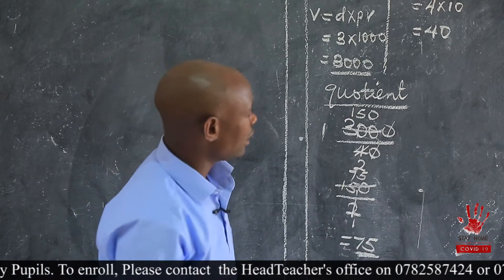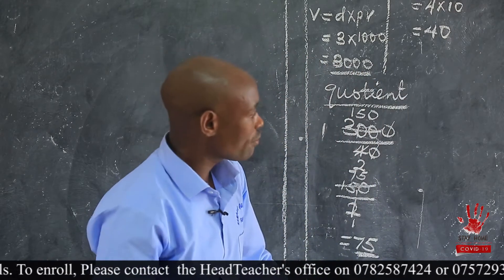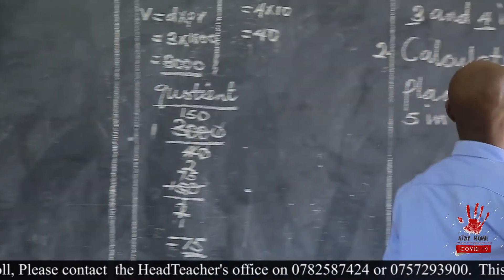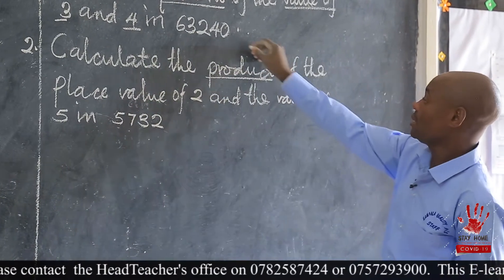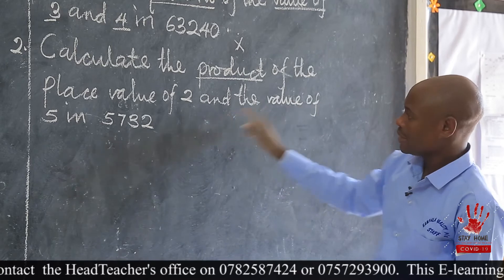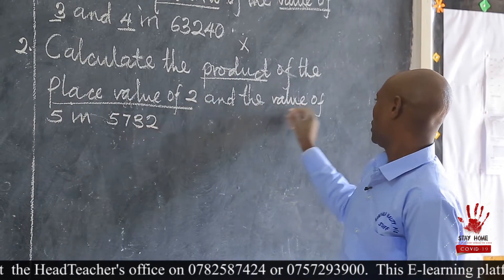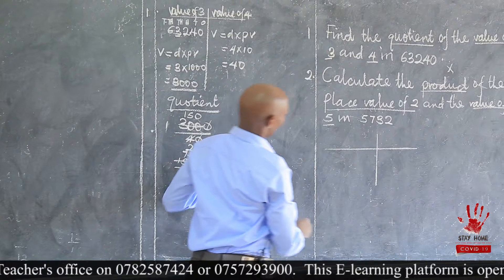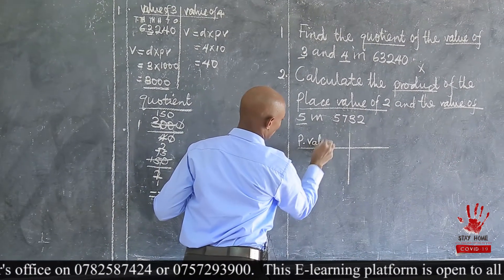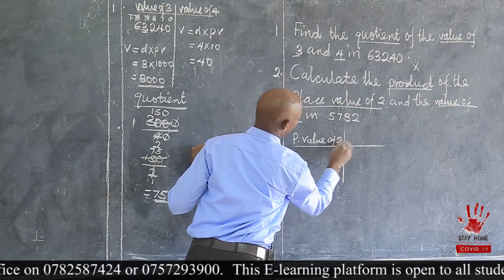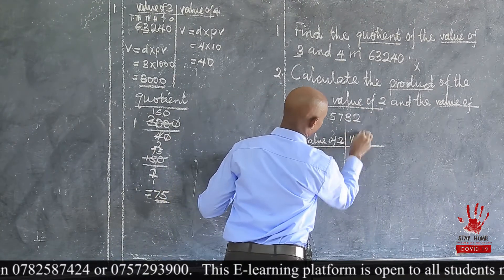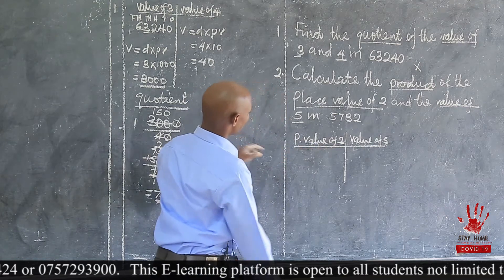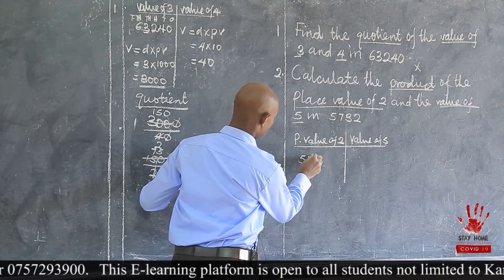We have also another one: calculate the product of the place value of 2 and the value of 5 in that number. So identify the keywords here. 'Product' — do you remember the meaning? The number you get after multiplying. Place value of 2, then value of 5. So we draw our table. We need the place value of which digit? The place value of 2. Then we need the value of which digit? Of 5. So what is the place value of 2 in the number? Remember the number is 5,732.